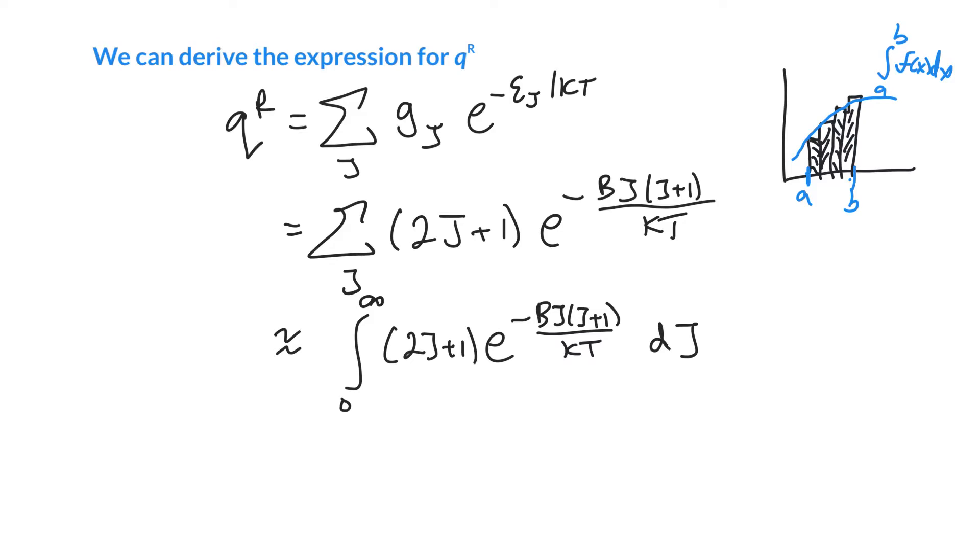So what do we have? 2j+1 times e to the minus bj(j+1) over kT, and we're integrating over values of j, so we've got dj at the end. Now, this expression here, you might say it doesn't seem like a neat trick because it looks super hard.